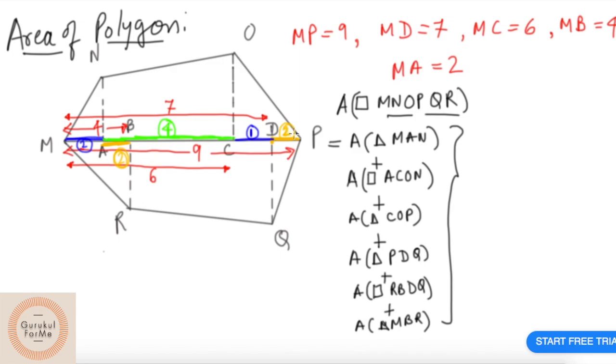Such as triangle MAN, trapezium ACON, triangle COP, triangle PDQ, trapezium RBDQ, and triangle MBR. If we add all these areas where we have standard formulas, we should be able to add them up and find the area of a polygon.